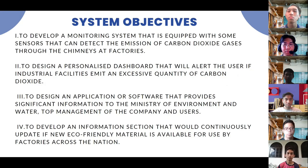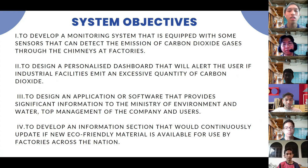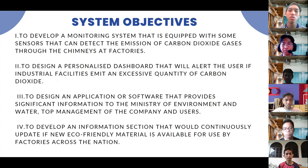Our system objectives are: first, to develop a monitoring system equipped with sensors that can detect the emission of carbon dioxide gases through factory chimneys. Second, to design a personalised dashboard that will alert the user if industrial facilities emit an excessive quantity of carbon dioxide. Third, to design an application or software that provides significant information to the Ministry of Environment and Water, top management of the company, and users. And lastly, to develop an information section that continuously updates new eco-friendly materials available for users by factories across the nation.